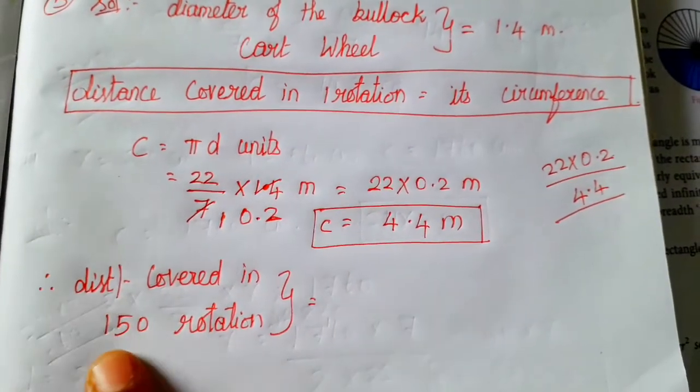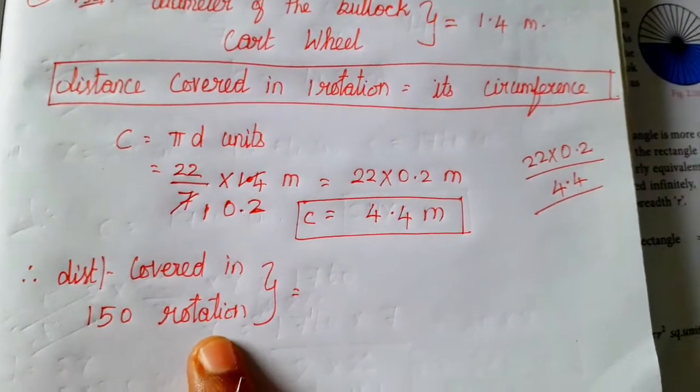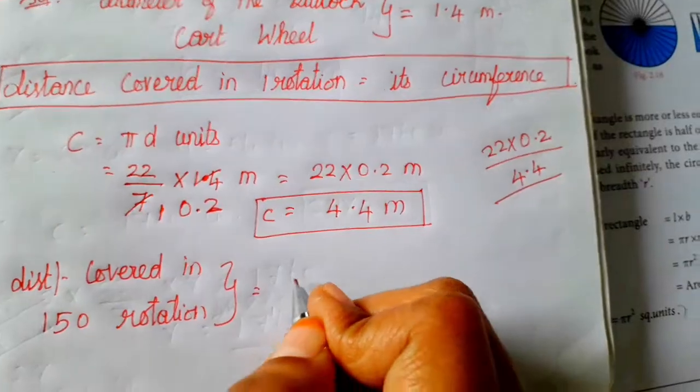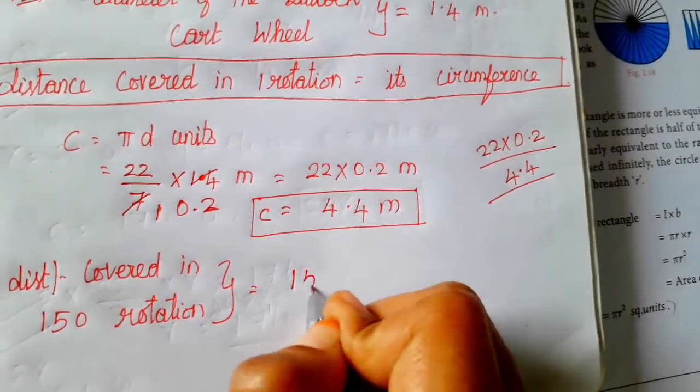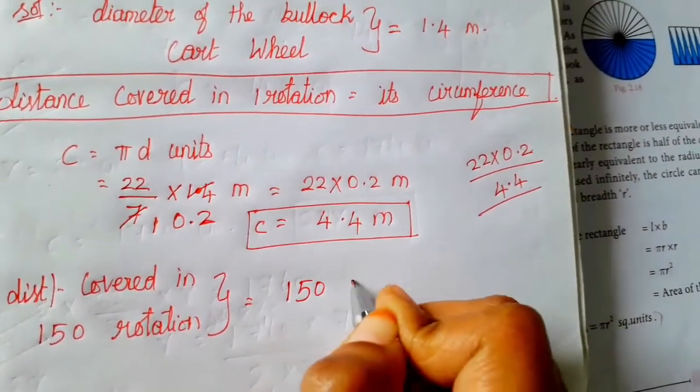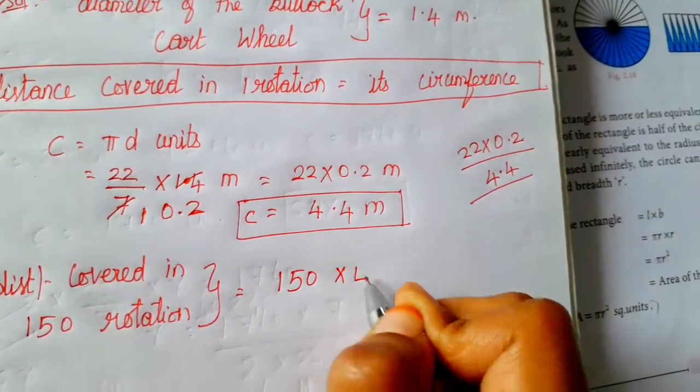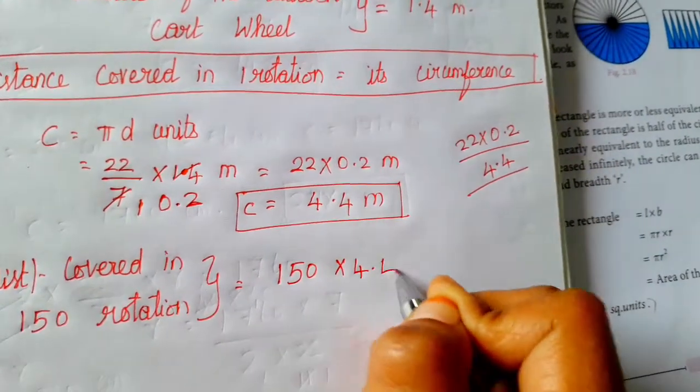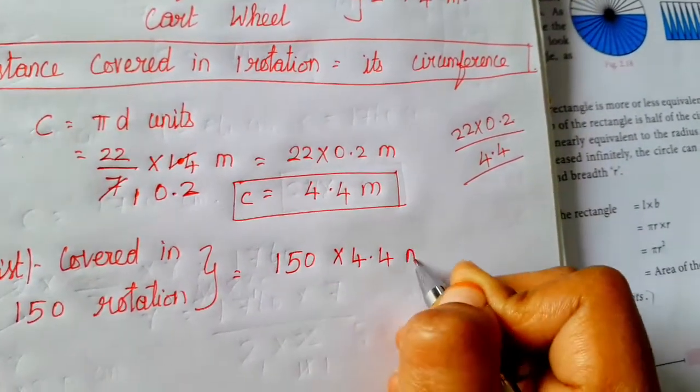So distance covered in one rotation is equal to 4.4 meter. Therefore, distance covered in 150 rotations is equal to 150 into 4.4 meter.